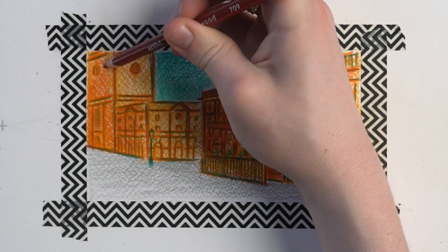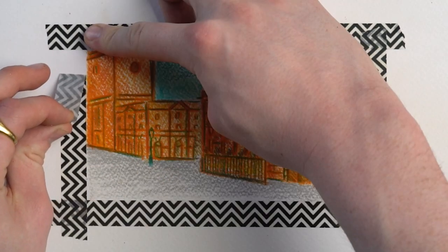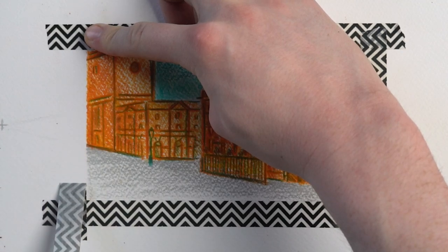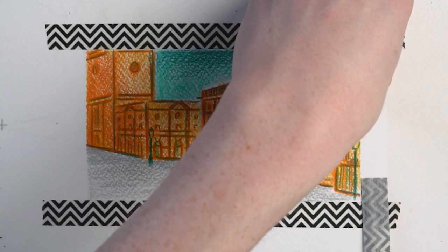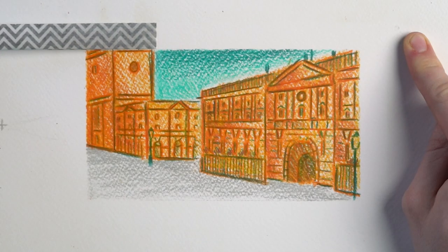Before using our ash grey pencil again for our pavement. Then, time to remove my washi tape, being extra careful and slow so not to rip my completed artwork. Thankfully, today we're safe and there's our pencil perspective artwork finished.